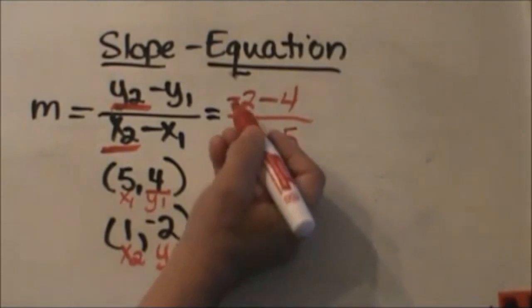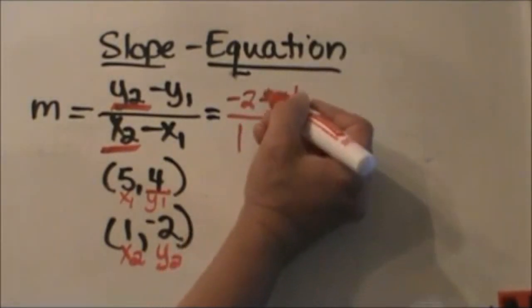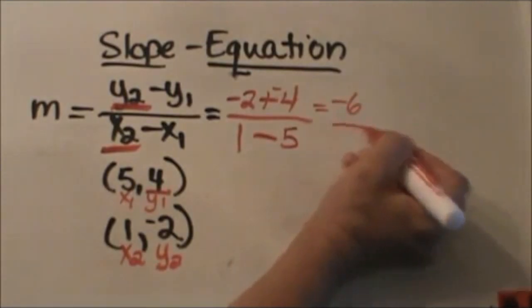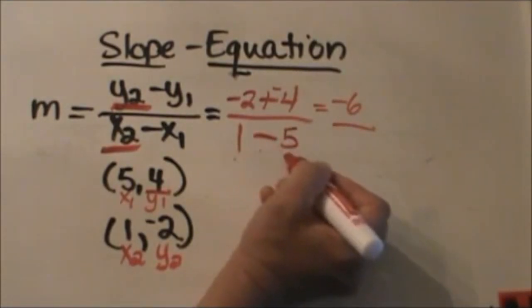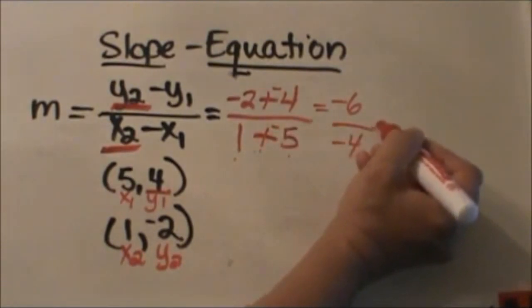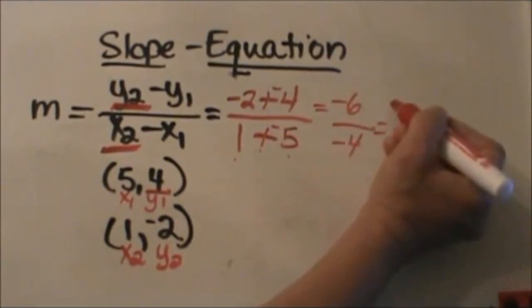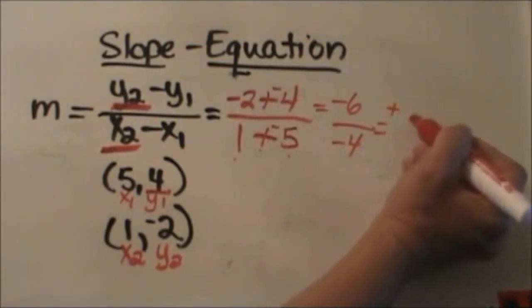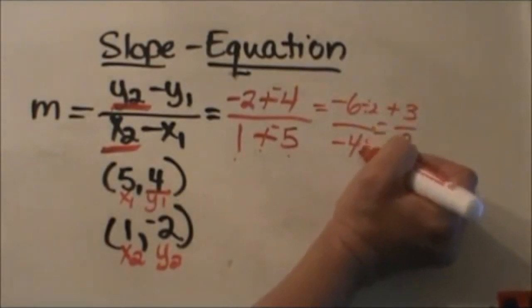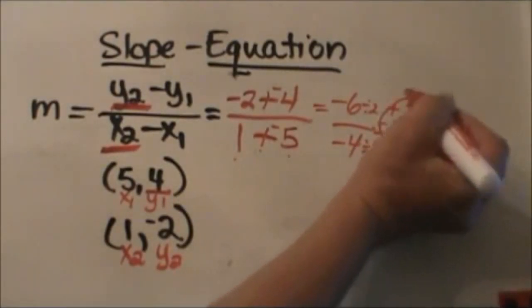So here's my equation. Negative 2 minus 4 is negative 6, 1 minus 5 is negative 4. So I have a negative divided by a negative which is positive 3 halves. All I did right there was reduce by 2 to get positive 3 halves.